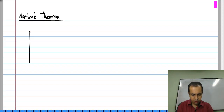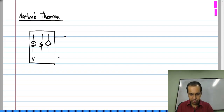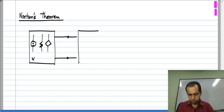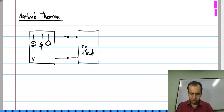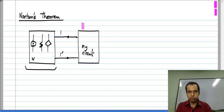Let us say we have a network N consisting of independent sources — I will show them by a single source — along with resistors and linear control sources, and it is connected to some other circuit. What we wanted was a representation of this circuit N at the terminals 1 and 1 prime, so it can be a stand-in for the circuit regardless of what you connect to it.